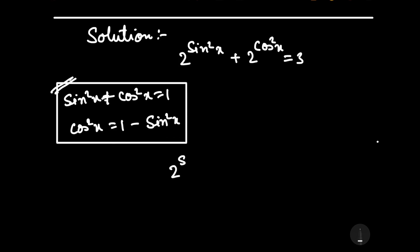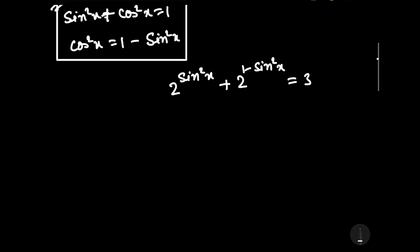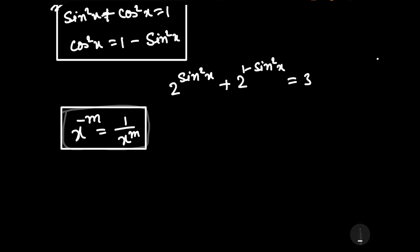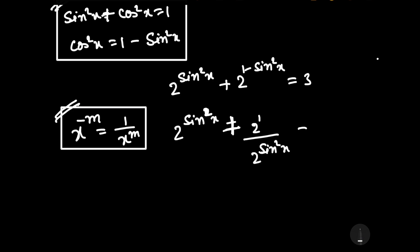Now we will substitute the value of cos²x in the above equation. It will be 2 to the power sin²x plus 2 to the power (1 minus sin²x) is equal to 3. As we know that x to the power negative m can be written as 1 upon x to the power m. Using this, we can write it as 2 to the power sin²x plus 2 times (1 upon 2 to the power sin²x) is equal to 3.